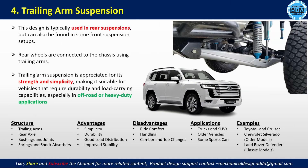Trailing arm suspension is commonly used in rear suspension but can also appear in front suspension setups. The wheel and the vehicle body frame are connected by the trailing arm. Components include the trailing arm, rear axle, bushing, joints, spring, and shock absorber. This suspension provides a simple structure and good strength, and is suitable for vehicles requiring durability and load-carrying capacity, like off-road and heavy-duty vehicles.